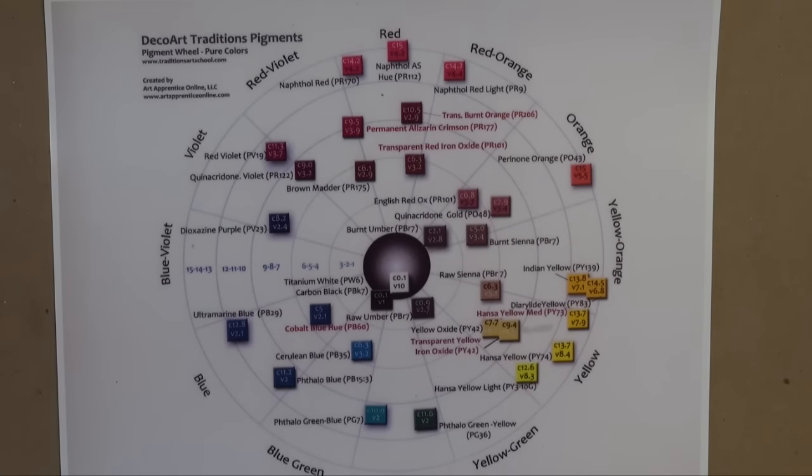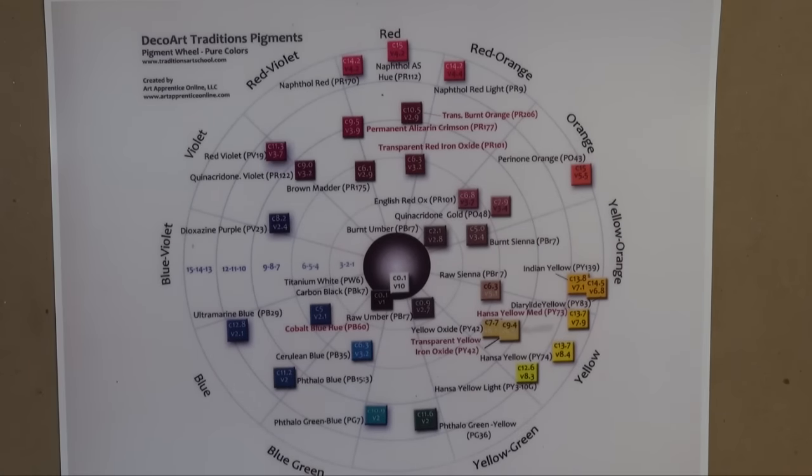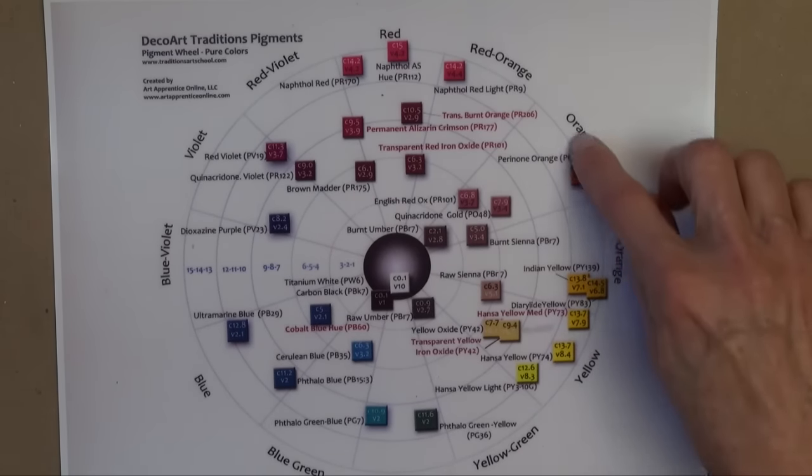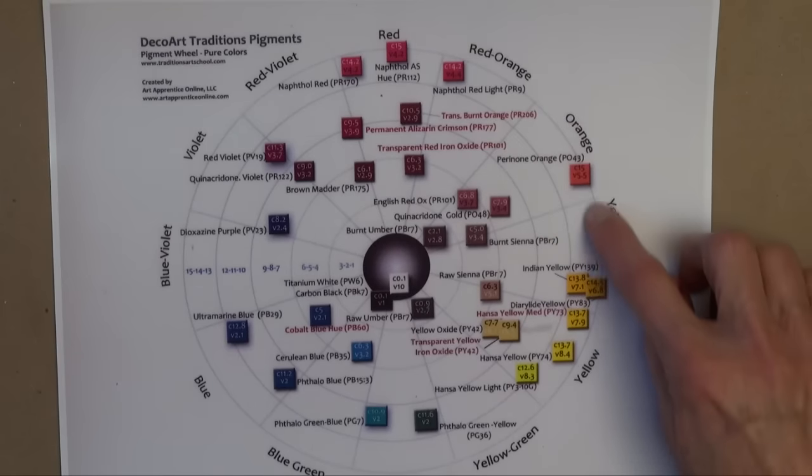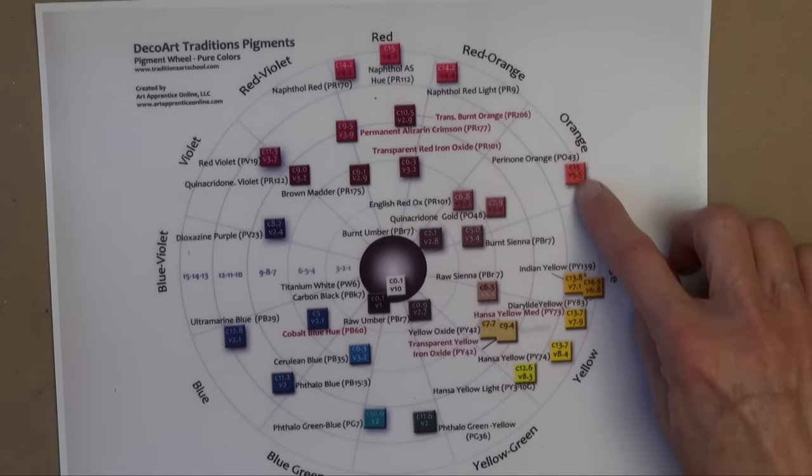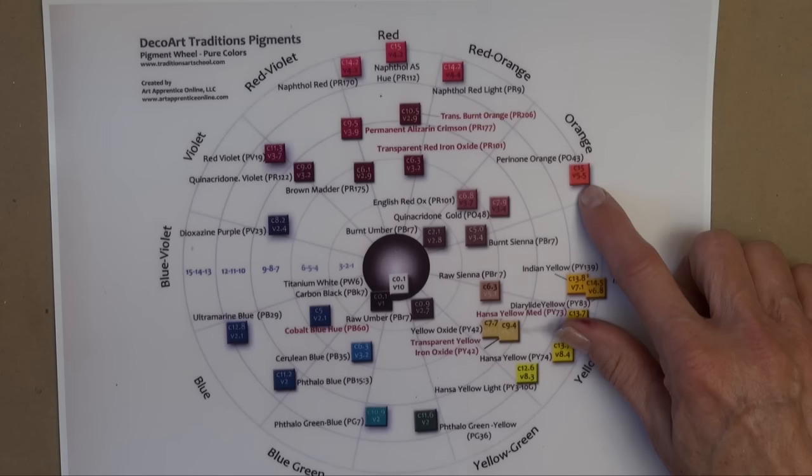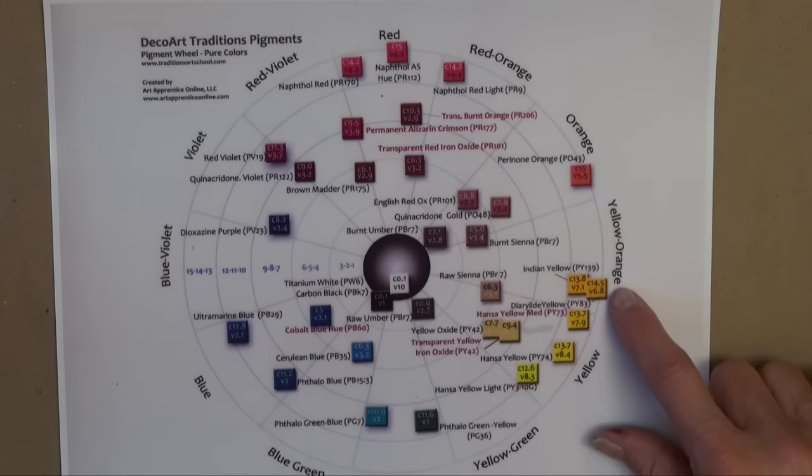Another use for this chart is to see temperature laid out right in front of you. Now over here, these are obviously warm colors. You can see the yellows and oranges and so forth. We have one orange that sits way out here. It's a chroma 15. That is actually our most intense color.